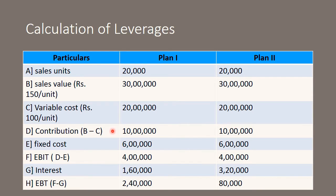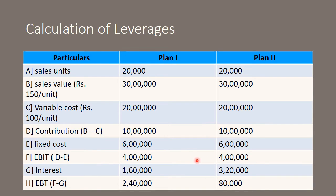Since 10 lakh rupees is our contribution value, we will now need EBIT for calculation of leverages. To get EBIT, we calculate contribution minus fixed cost. Contribution is 10 lakh rupees and fixed cost is 6 lakh rupees — fixed cost remains the same for both plans. So 10 lakhs minus 6 lakhs gives EBIT of 4 lakh rupees for Plan 1 as well as Plan 2.